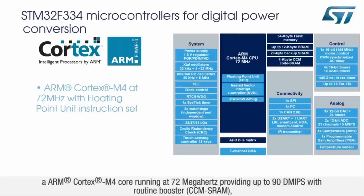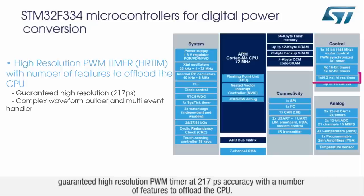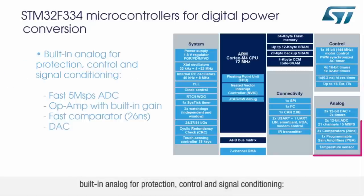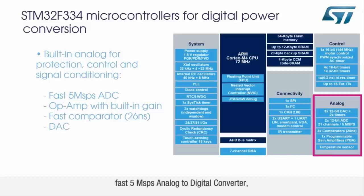The STM32F334 embeds an ARM Cortex-M4 core running at 72 megahertz, providing up to 90 DMIPS with routine booster CCM SRAM, and a guaranteed high-resolution PWM timer at 217 picoseconds accuracy, with a number of features to offload the CPU.